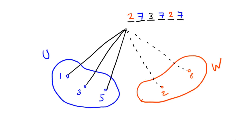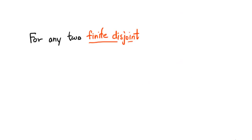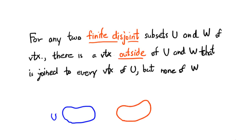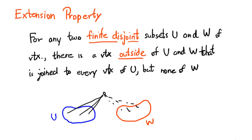Of course, this holds in general. For any two finite disjoint subsets U and W, there is a vertex outside of U and W, which is joined to every vertex in U, but none in W. This property is called the extension property. But let's just call it a killer property, because it is going to kill all the intuitions.